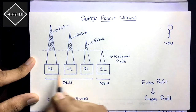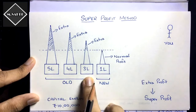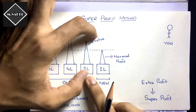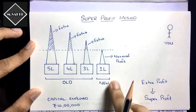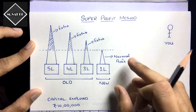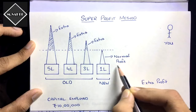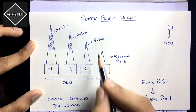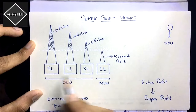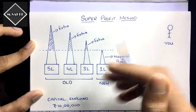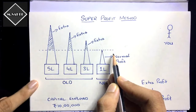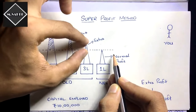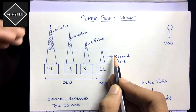You can't earn profit like those old players because those old businesses have goodwill. Due to their goodwill they earn so much extra profit. But as a new player, if you create a new business you will earn only minimum profit. That minimum profit is called normal profit. If we draw a cutoff line at the normal profit level, you can see that the old businesses are earning much more — extra profits above that line.